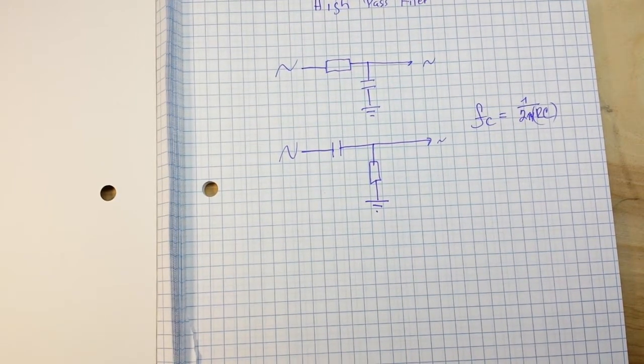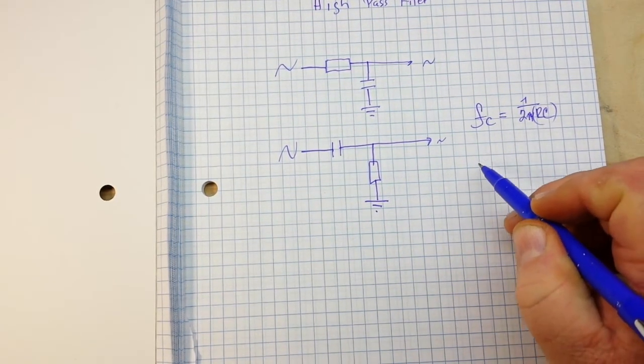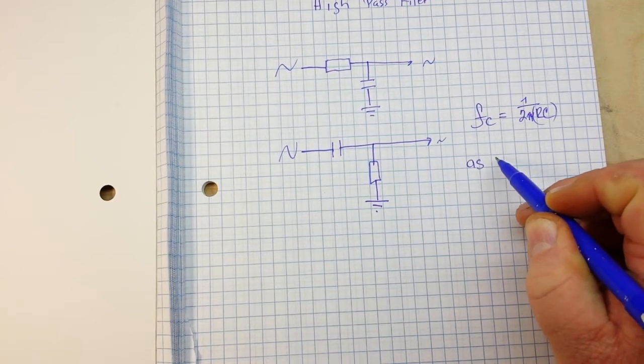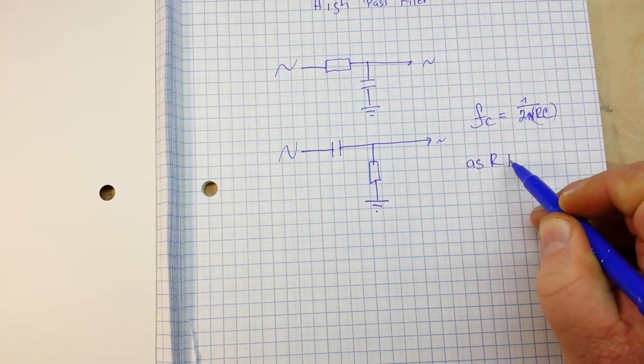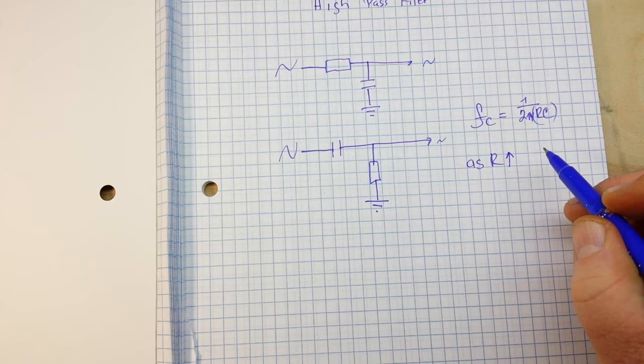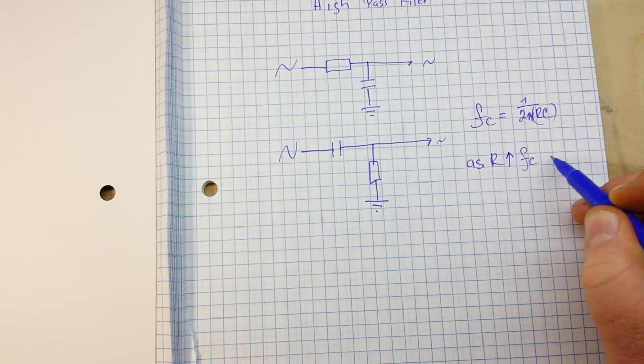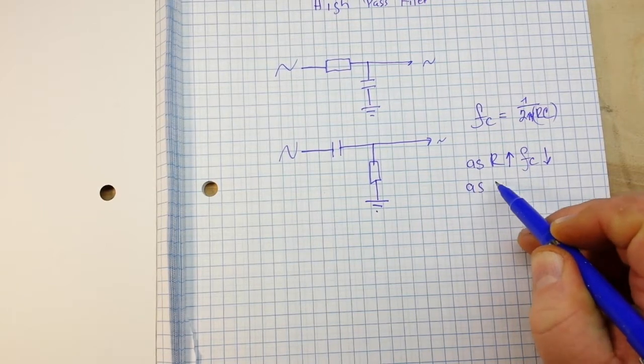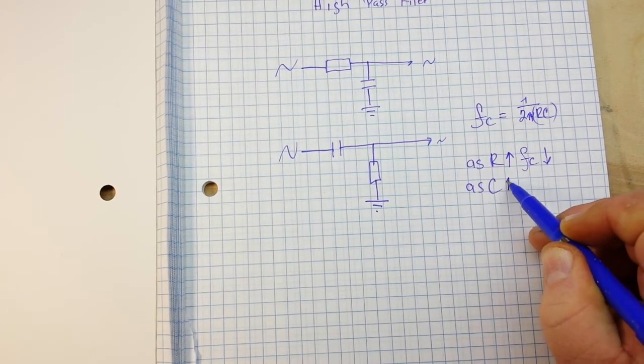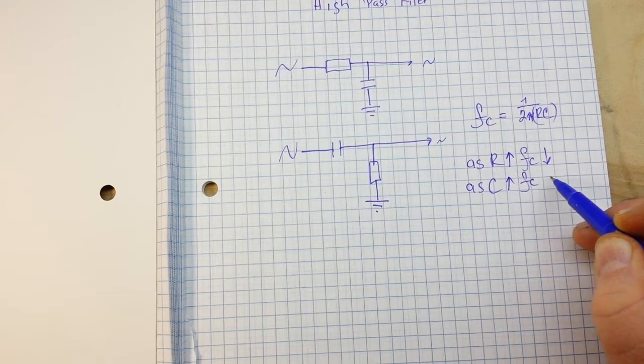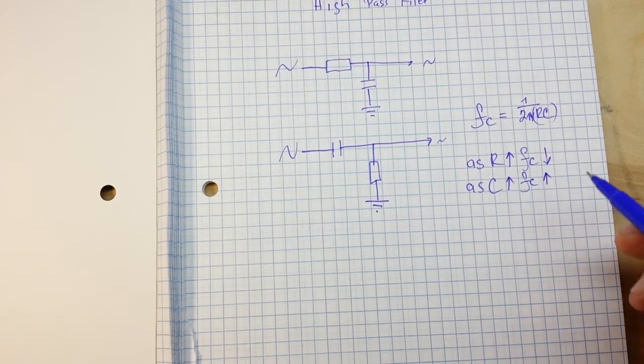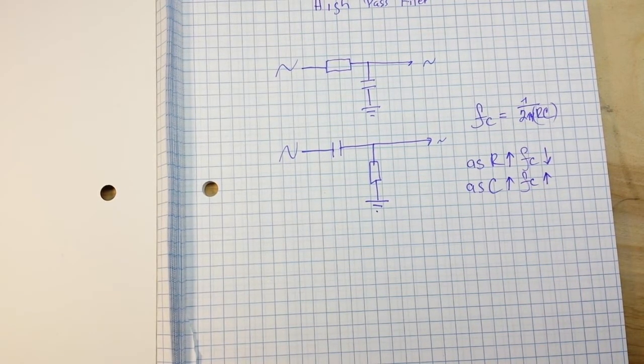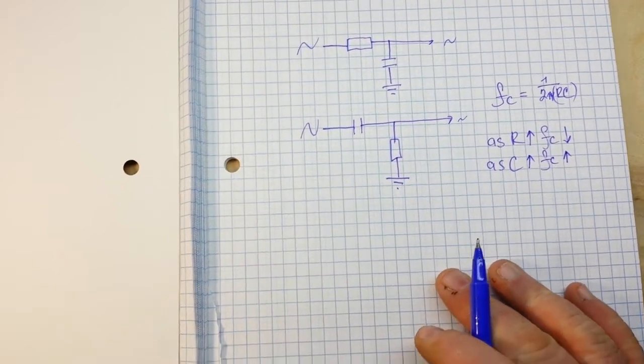Now, when we put our filter together, if we remember, as our resistance rises, our cutoff frequency drops. And as our capacitance rises, our cutoff frequency increases. All pretty simple.